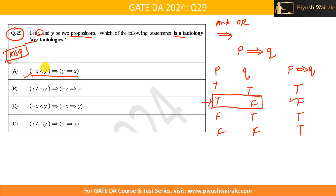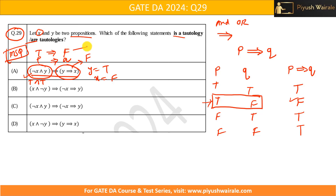For option A, treating the left side as p and right side as q: p implies q is false only when p is true and q is false. So q (which is y→x) is false when y is true and x is false. With y=true and x=false: negation of x is true, and y is true, so true AND true = true. Then true implies false gives false. So option A is not a tautology.